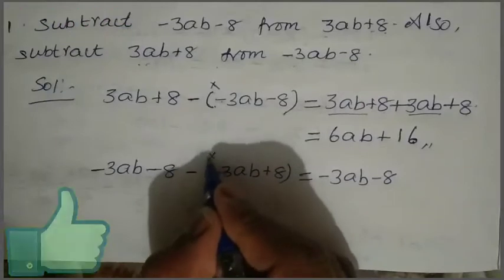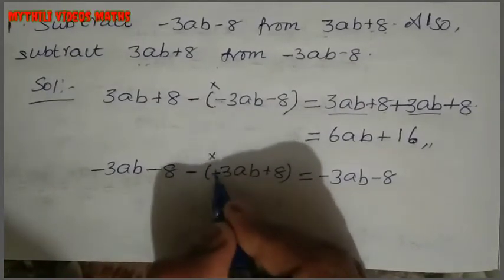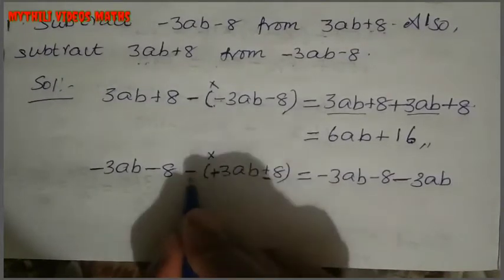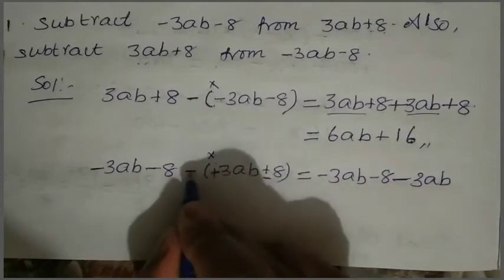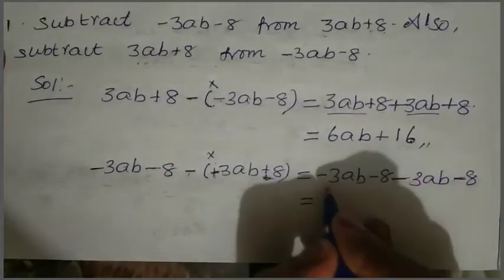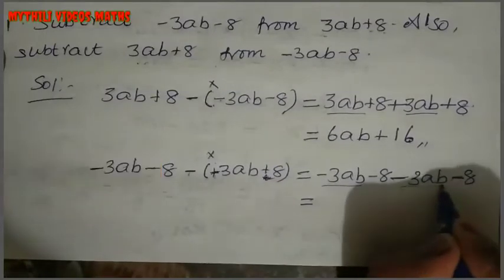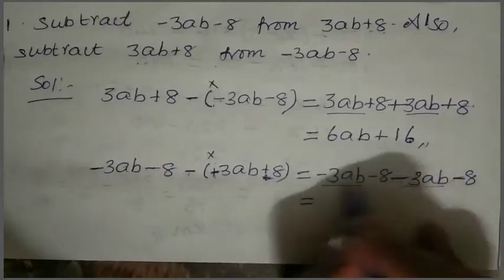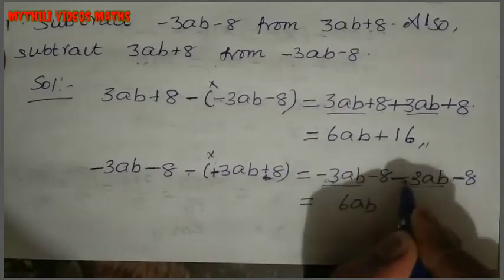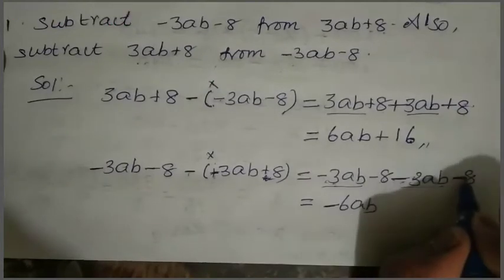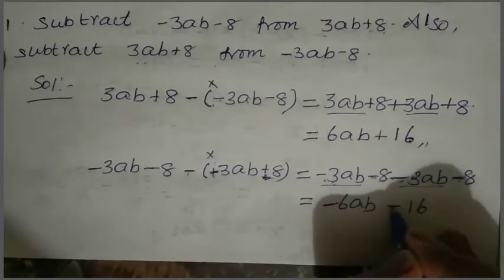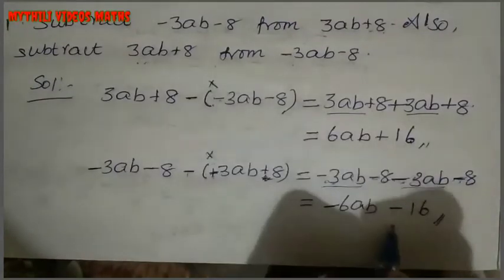The bracket acts as a multiplication symbol. So minus into plus means minus — 3AB. Again, you can see the plus symbol and minus symbol, so minus into plus is again minus 8. Now collect like terms: minus 3AB and minus 3AB add to give minus 6AB. The constant terms minus 8 and minus 8 add to give minus 16. So the answer is minus 6AB minus 16.